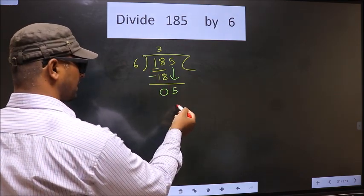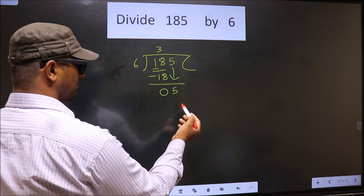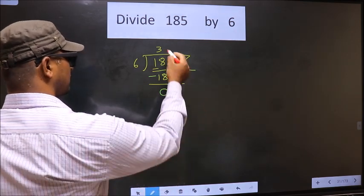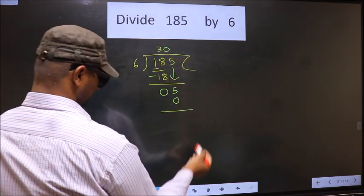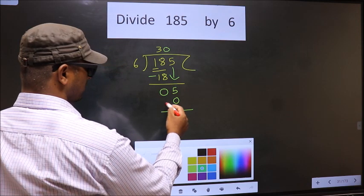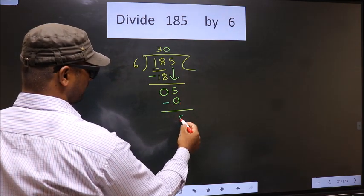If we write 6, that is larger than 5. So what we do is, we take 0 here. So 6 into 0, 0. Now you subtract. 5 minus 0, 5.